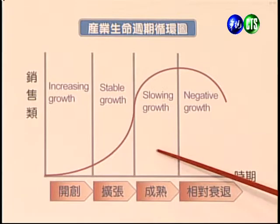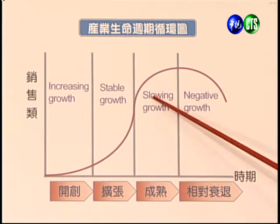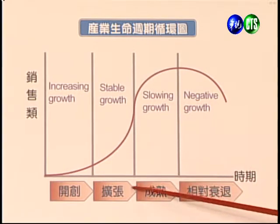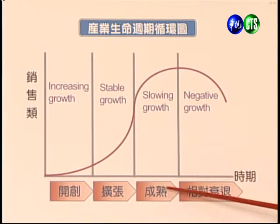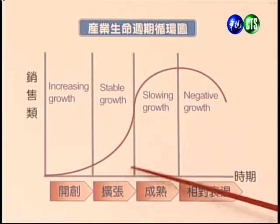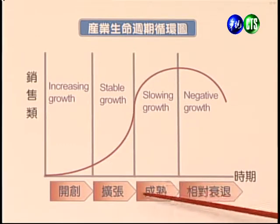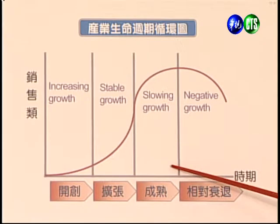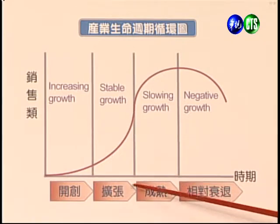第三階段成熟階段，成長速度已經slow down變慢了。以台灣80年代電子股為代表，在網路泡沫化之前電子產業已達非常成熟階段，但新的產業重心還沒出來，企業找不到新的投資標的，資本無法尋求更好的投資方向。財務上產生所謂cash cow現象，就是公司有很多現金但找不到投資標的。